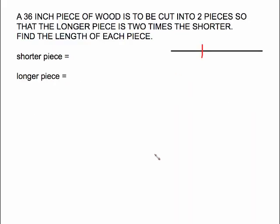Let's look at another type that goes back to a geometry kind of type but this one's pretty easy format. A 36 inch piece of wood is to be cut into two pieces but not right smack in the middle so that the longer piece is two times the shorter. Find the length of each piece.